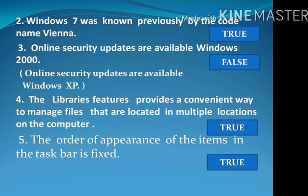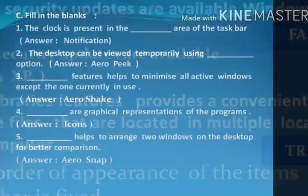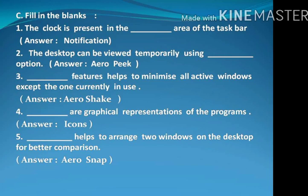Question number 3: Online security updates are available in Windows XP. The correct statement is: Online security updates are available in Windows XP. Question number 4: The library's feature provides a convenient way to manage files that are located in multiple locations on the computer. The statement is true. Question number 5: The order of appearance of the items in the taskbar is fixed. The answer is true.